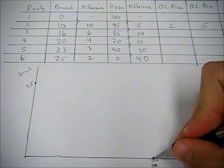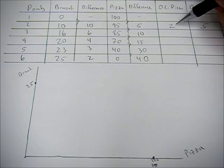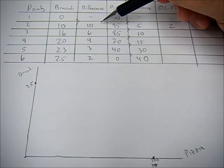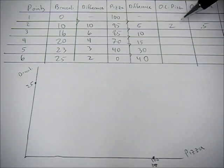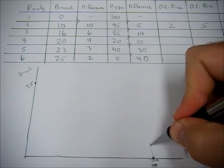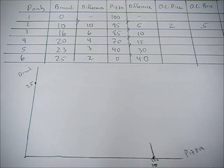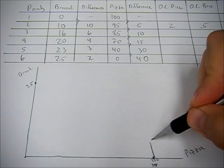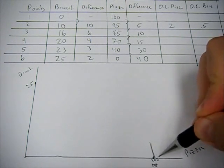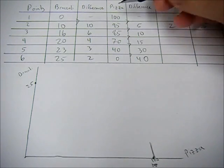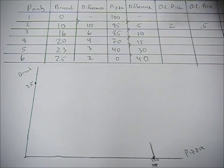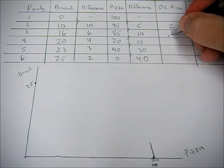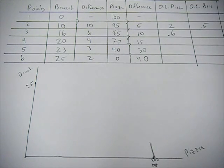Do the same for pizza, difference of 5, 10, 15, 30, and then 40. So we're starting here with broccoli at 0 and pizza at 100, and we want to find the slope of that. We take the rise, which is going to be 10, over the run, which is 5, gives us a slope of 2. So we have some pretty steep line coming out from where broccoli equals 0 and pizza is 100. We go to the next point, we get 6 over 10, which is equal to 0.6.